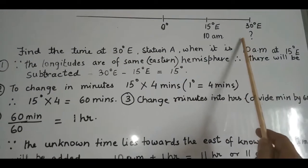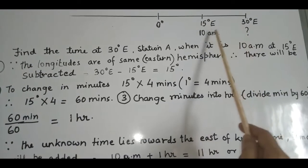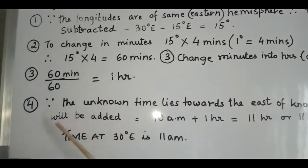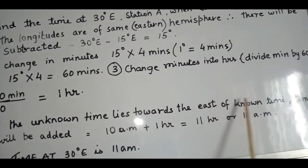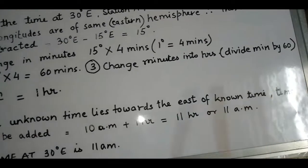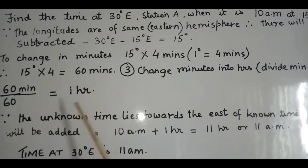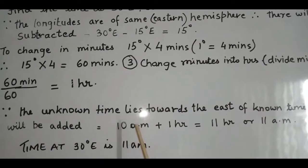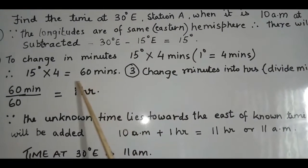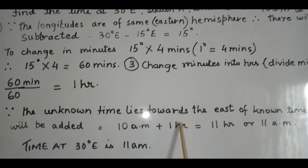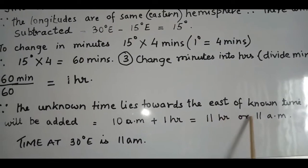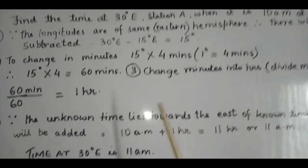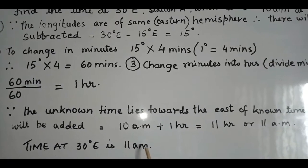Now check whether the unknown time lies towards the east or west. In this case it lies towards the east. Since the unknown time is east of the known time, we add the answer to the known time. So 10 AM plus 1 hour equals 11 AM. Therefore, the time at 30 degrees east is 11 AM.